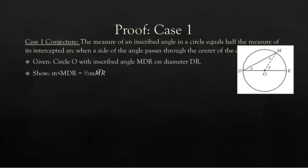Our case one conjecture: the measure of an inscribed angle in a circle equals half the measure of the arc when a side of the angle passes through the center of the circle. Here we have circle O with an inscribed angle MDR on diameter DR. We want to prove that the measure of angle MDR is half of arc MR. We're going to make a triangle by connecting the center O with point M, and we've labeled some angles for convenience.